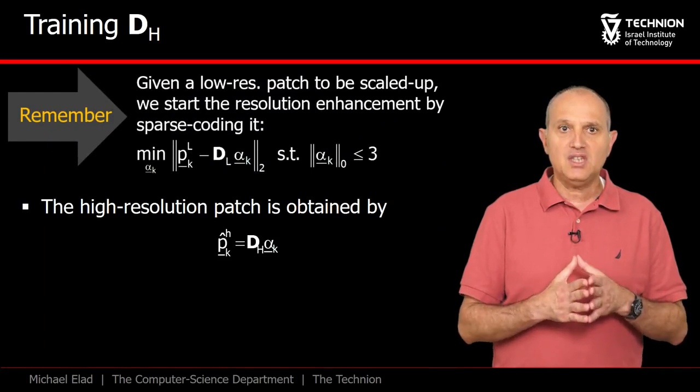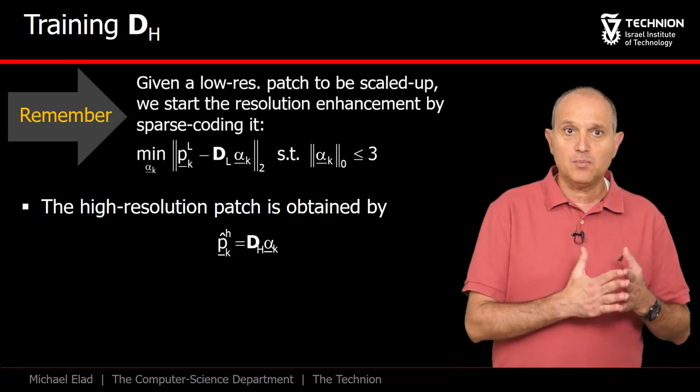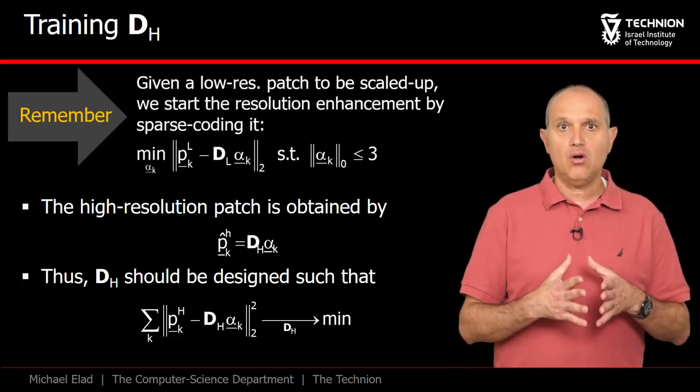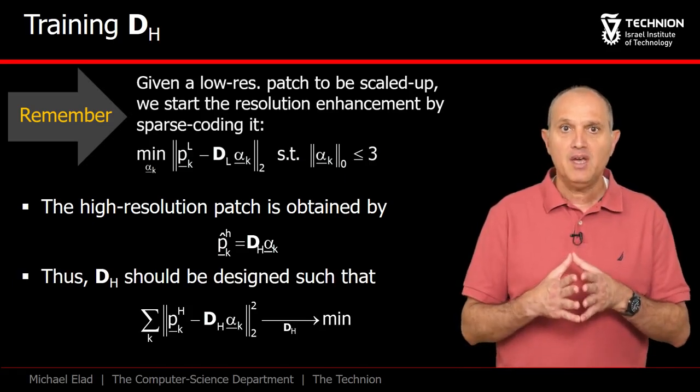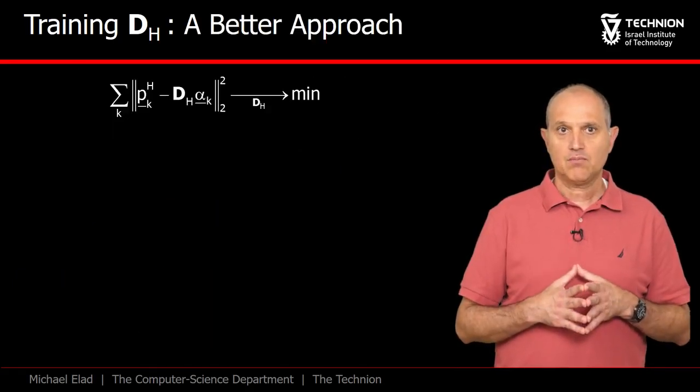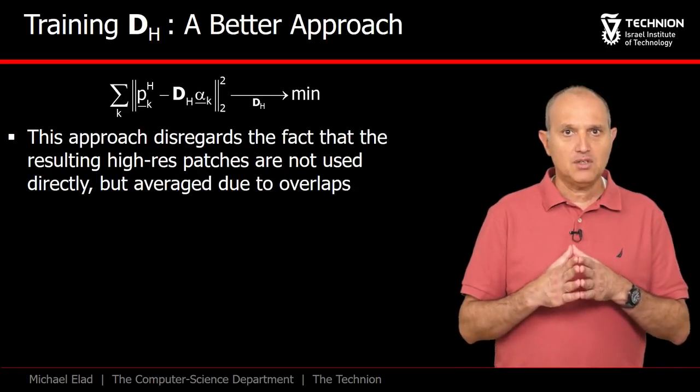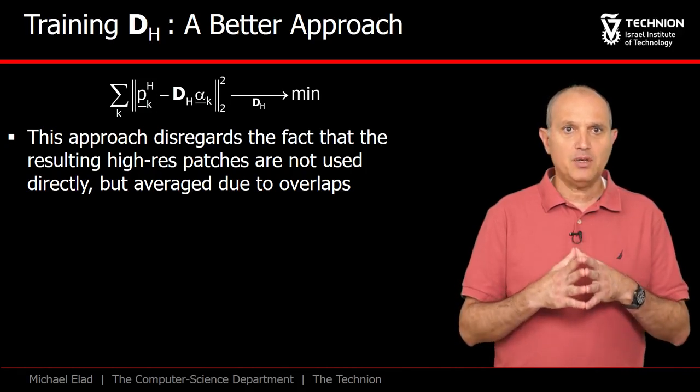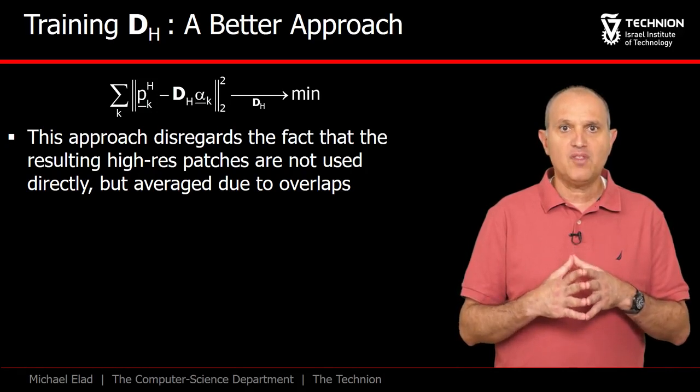We just performed the sparse coding and got all the representations for all the patches, and we should proceed by multiplying these representations by DH in order to get as close as possible to the high resolution patches. Thus, all that this implies is that we should solve this least squares problem and get DH. This is the least squares we have just defined, and in fact, this is not the best we could do.